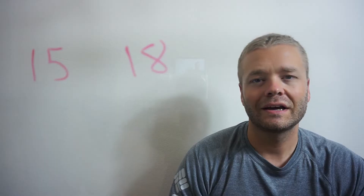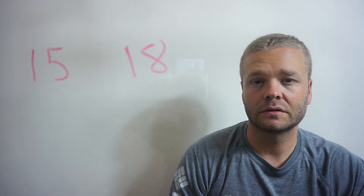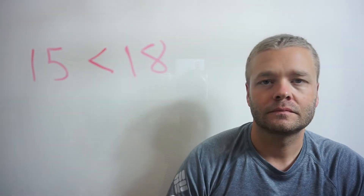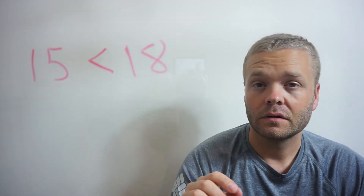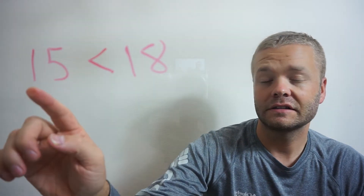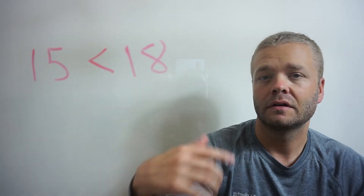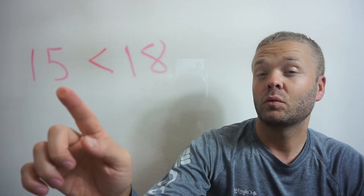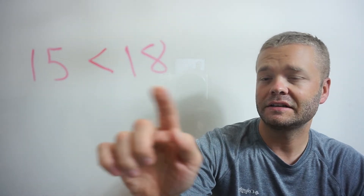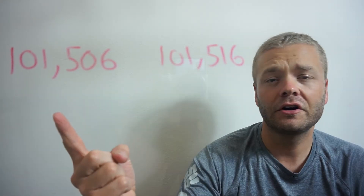What if we need to compare numbers that are side by side — just two numbers? We're going to use the greater than, less than, or equal to sign. Once again, start with the biggest place value — the tens. Inside the tens there's a 1 and a 1, the same. Go to the next: inside the ones there's a 5 and an 8. Eight is bigger than 5, so 18 is bigger than 15.